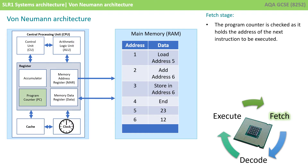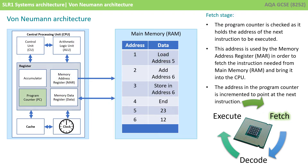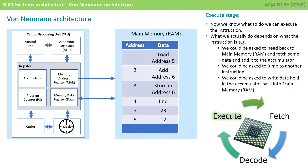Let's look at a typical fetch-execute cycle in a little more detail. We start with the fetch stage: the program counter is checked as it holds the address of the next instruction to be executed. This address is used by the memory address register to fetch the instruction needed from main memory and bring it back into the memory data register. The address in the program counter is then incremented to point to the next instruction. Now the instruction is in the CPU, the control unit decodes it to see what has to be done. Then we execute: we could be asked to fetch data from main memory and add it to the accumulator, jump to another instruction, or write data held in the accumulator back into RAM.